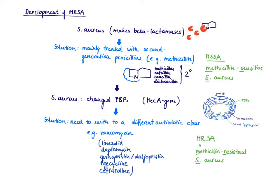If Staph aureus has this changed PBPs, we call the Staph aureus methicillin-resistant Staph aureus. This tells you that you cannot use any second-generation or any other beta-lactam antibiotic anymore to treat this Staph aureus. So what can you do? Well, the only solution is you need to switch to a different antibiotic class. You need to get out of this beta-lactam group.